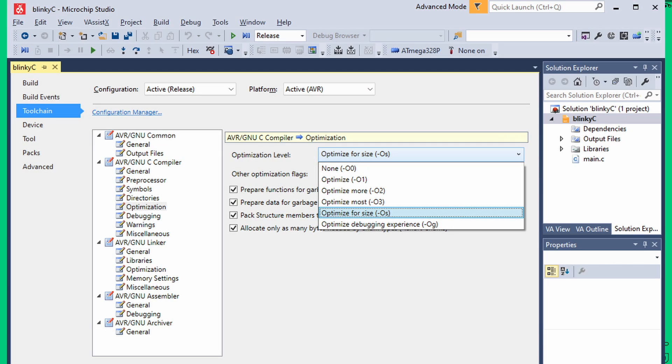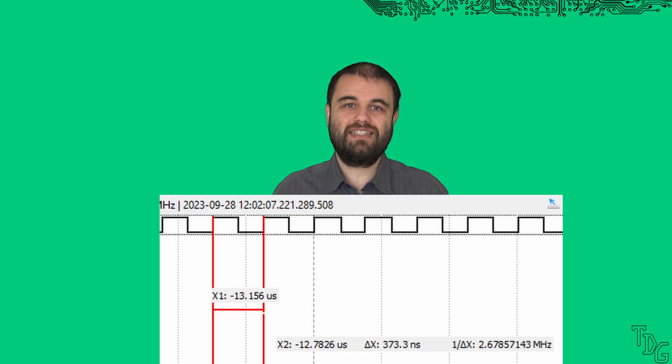But what happens if I switch to release? The debug symbols are stripped and optimization is usually turned on. All depends on the compiler settings. The very same C code now runs at 2.68 MHz. 34% faster. Also, the final hex file got 8 bytes smaller. Not much, but that made so much difference.